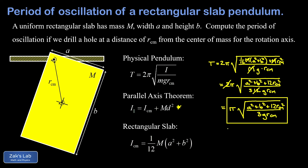One final note: notice that the mass cancelled out of this result entirely. It doesn't matter what the mass of the slab is — all that matters is the dimensions of the slab and the distance between the center of mass and where we drilled the hole. If you enjoyed this video or found it useful, check out another one by clicking one of the links on the left, or click the Zach's Lab logo to explore dozens of physics and math playlists. Leave your questions, comments, and requests below and I'll get back to you within 24 hours. Thanks for watching Zach's Lab and best of luck on your math and physics journey.